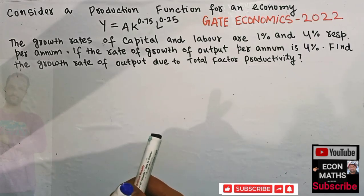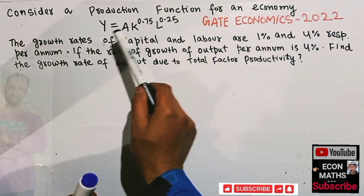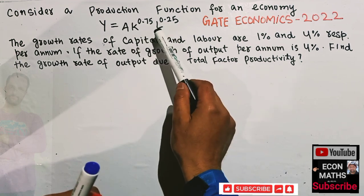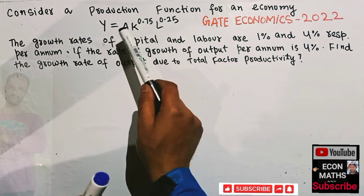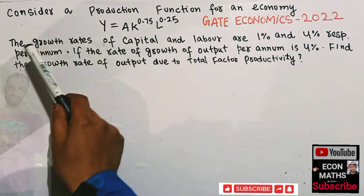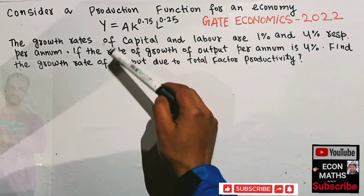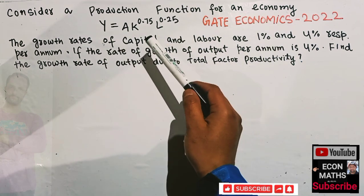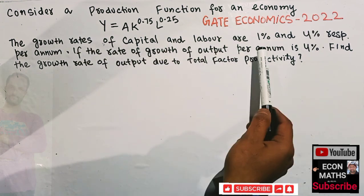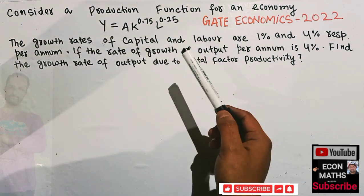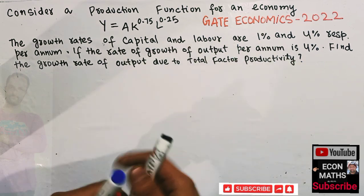Let us solve a question that was asked in today's GATE Economics paper of 2021. Consider a production function for an economy given as y = A × K^0.75 × L^0.25, where K, L, and A are capital, labor, and total factor productivity, and y is the output. The growth rate of capital and labor are given as one percent and four percent respectively. If the rate of growth of output per annum is four percent, find the growth rate of output due to total factor productivity.